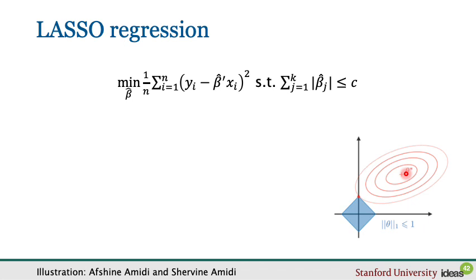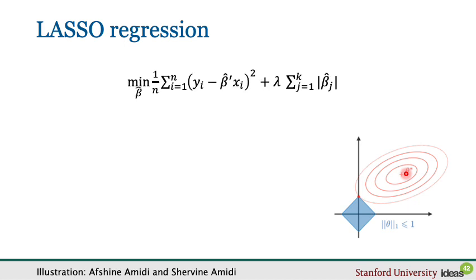In practice, we solve the Lagrange relaxation of that problem, replacing the constraint by a shadow cost: we pay a price whenever the coefficient increases. So instead of minimizing in-sample loss subject to a constraint, we minimize the in-sample loss plus a cost lambda for the size of the coefficients. This specific regression is called lasso regression.